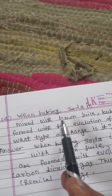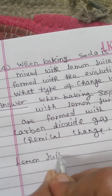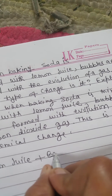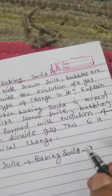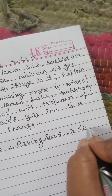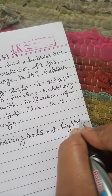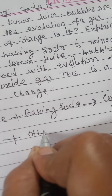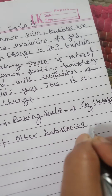Here, baking soda is mixed with lemon juice. It means: lemon juice plus baking soda produces bubbles of carbon dioxide, plus other substances.